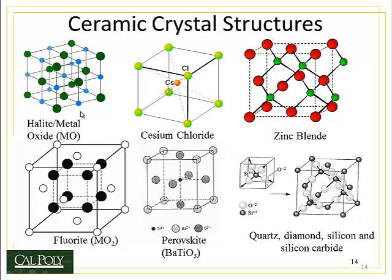We have crystal structures like the halite structure, or the metal oxide structure, where an anion is next to a cation next to an anion and so on. The classic example of a metal oxide is sodium chloride, which is where the name halite — Greek for salt — comes from. Another crystal structure is cesium chloride, which exists for cesium chloride and a number of other famous ceramic materials. In this crystal structure, the chloride occupies the corner atoms and the cesium occupies the body-centered position.